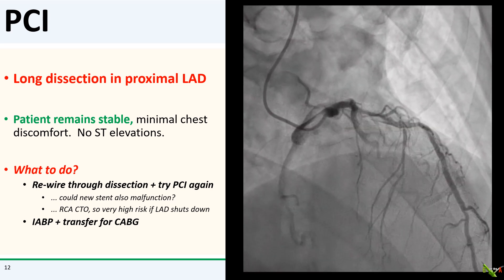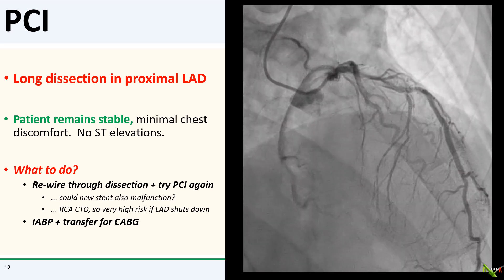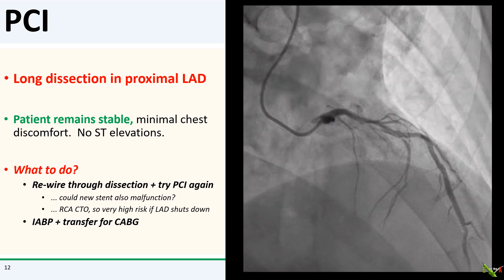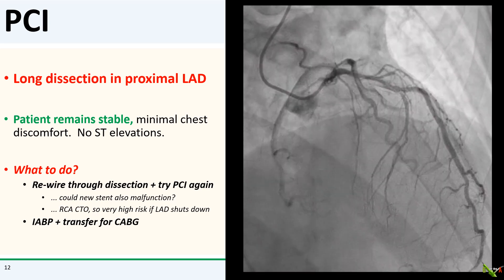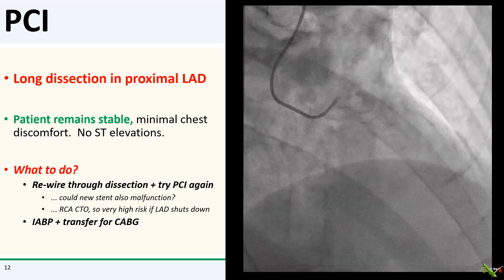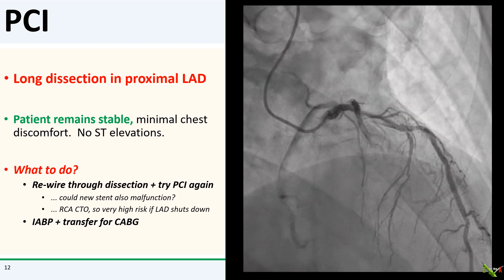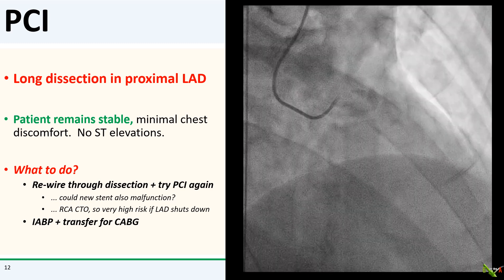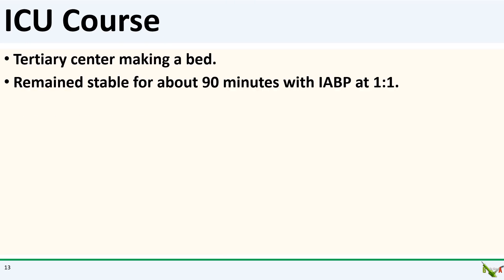Option two would be CABG. I talked it over with cardiac surgery, and we decided the best thing to do was to put in a balloon pump and transfer him for urgent CABG. We moved him to the ICU. The tertiary center was moving patients around to make a bed for this patient. For the first 90 minutes, he did fine — he was completely doing okay.